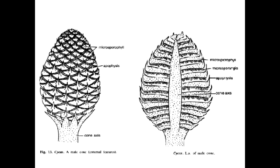The male cone shows sympodial growth, and the outer covering of the male cone is formed by the closely set sterile ends of the microsporophylls, usually producing upcurved apophyses.